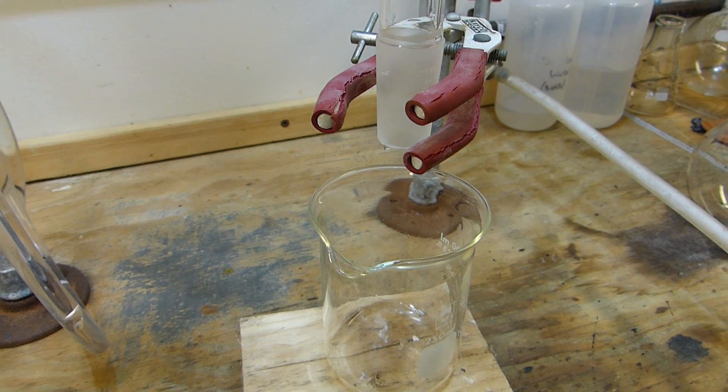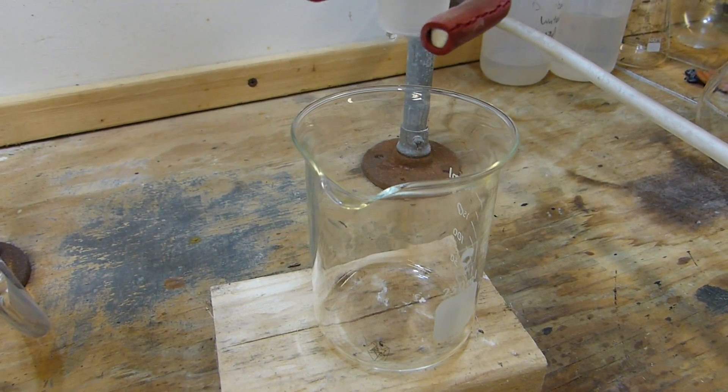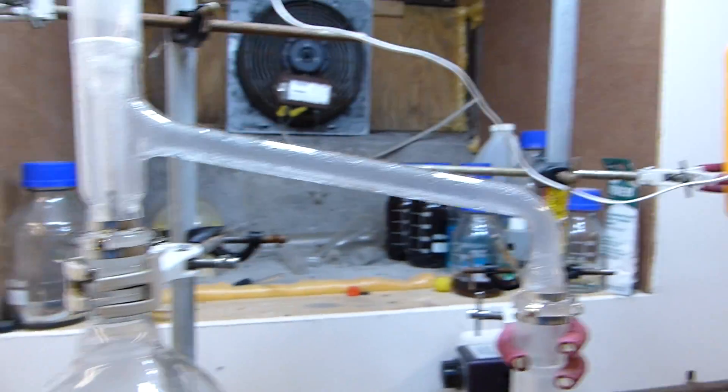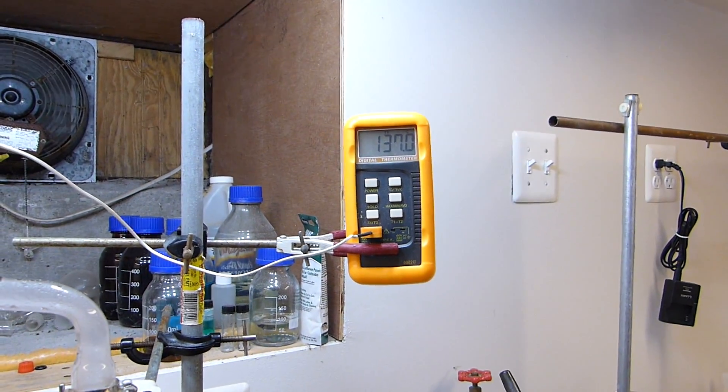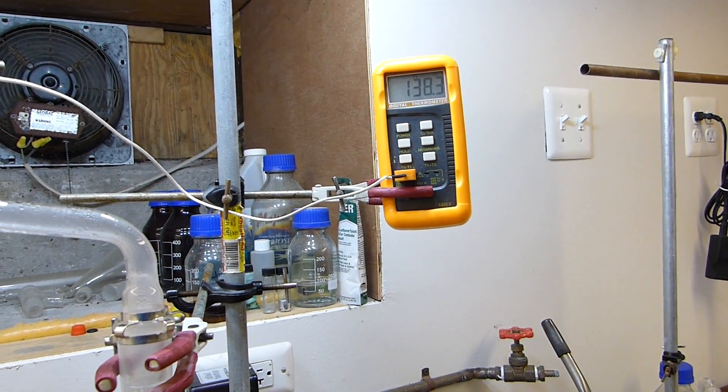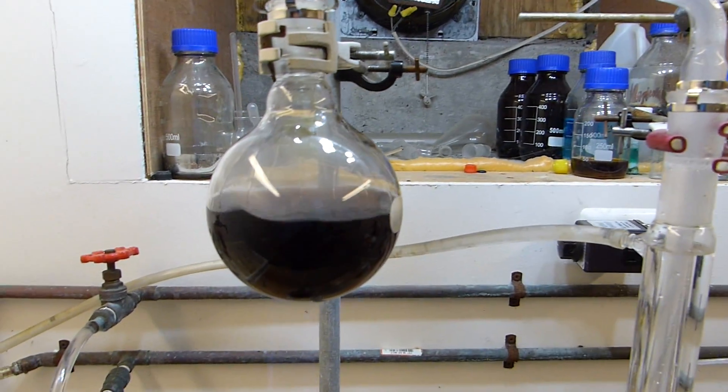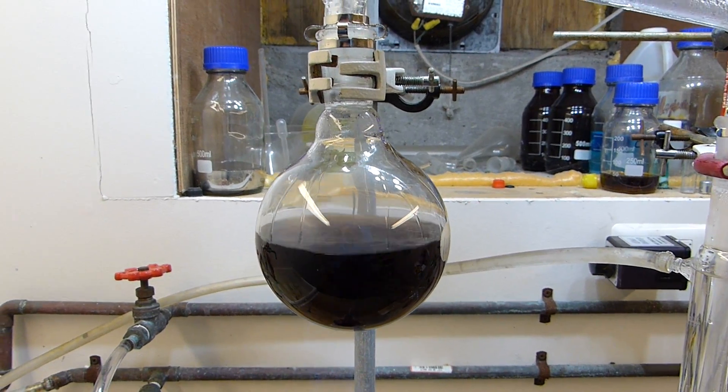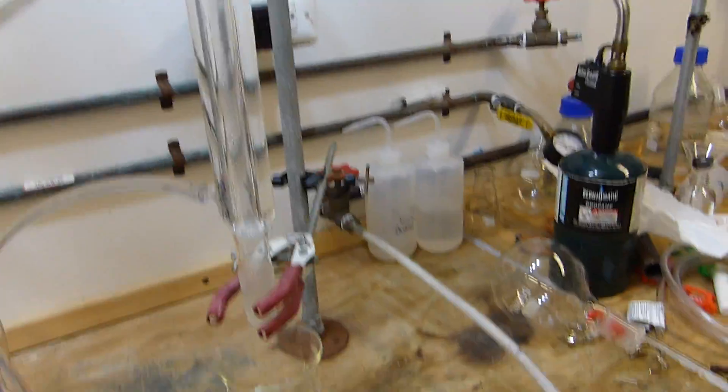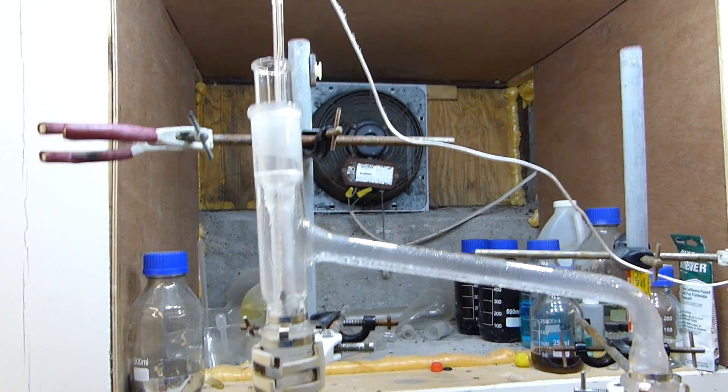All right we're getting our first collection of distillate here just a few drops at a time, basically just pulling the water off. It's pulling over at 136 C which indicates a weak sulfuric acid solution which is distilling out. And I'm just going to continue to heat this until we're distilling sulfuric acid at roughly the azeotropic temperature and then we'll switch flasks to the collection flask.